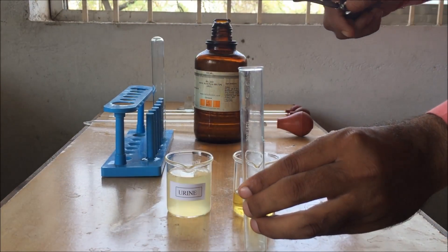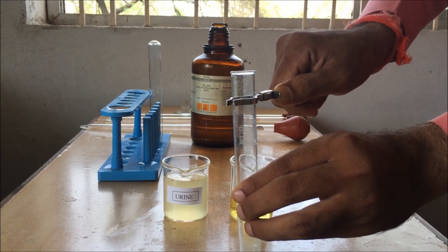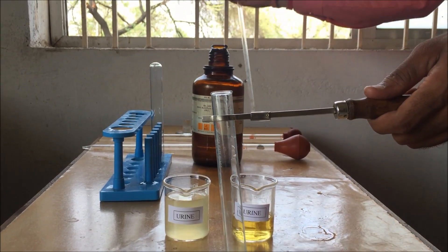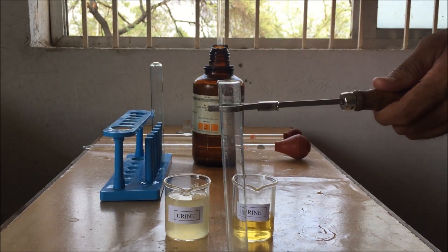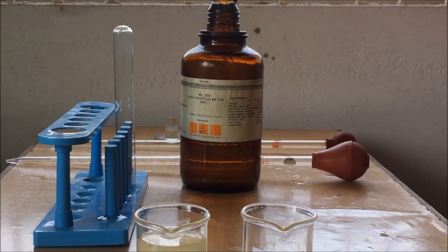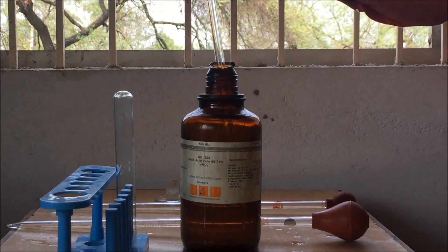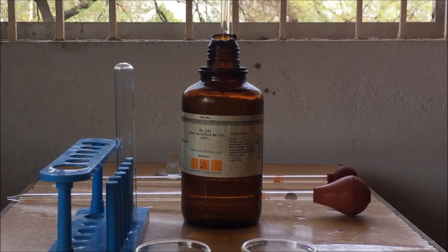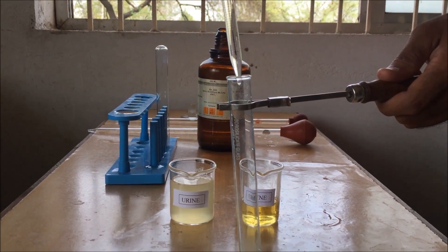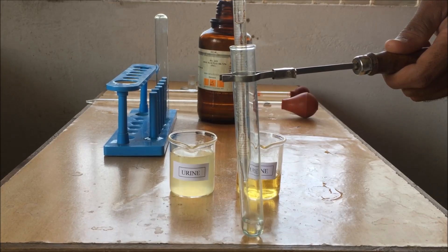Now there is another method to determine the albumin in urine, that is the nitric acid method. We will require concentrated nitric acid. Thus, safety is our prime concern. Firstly, clamp the test tube with the test tube holder and transfer a small quantity of nitric acid to the test tube. This nitric acid is very concentrated, so care should be taken while transferring the nitric acid to the test tube.